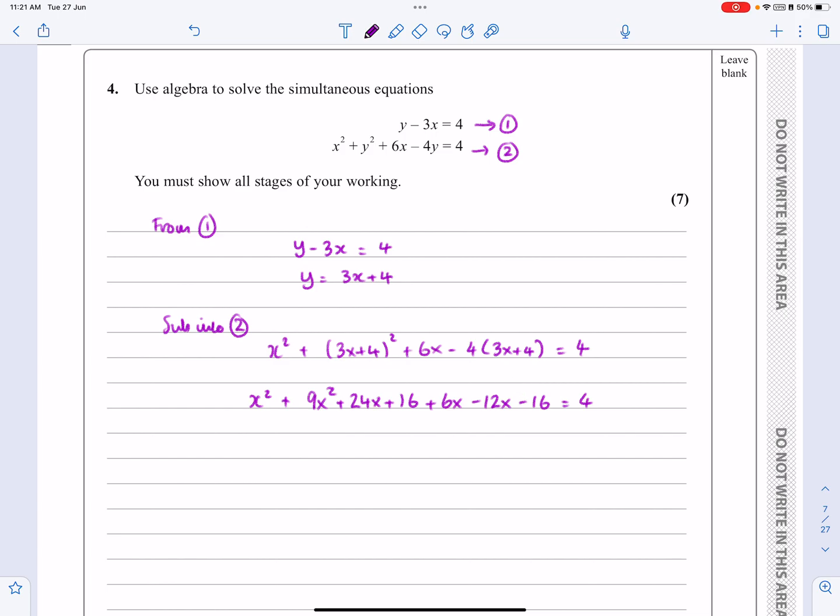Right, we've just got to tidy this all up and make it look like standard quadratic form: ax² + bx + c = 0. So what have I got here? I've got 10x², I've got 18x.